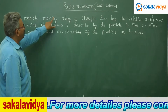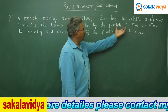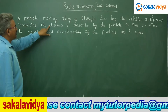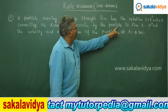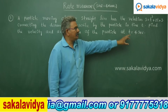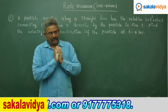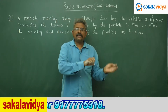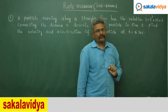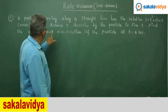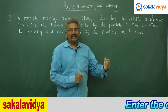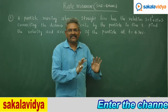A particle moving along a straight line has the relation s is equal to t cubed plus 2t plus 3, connecting the distance s described by the particle in time t. Find the velocity and acceleration of the particle at t is equal to 4 seconds. The problem may be very lengthy but uses a very simple concept.